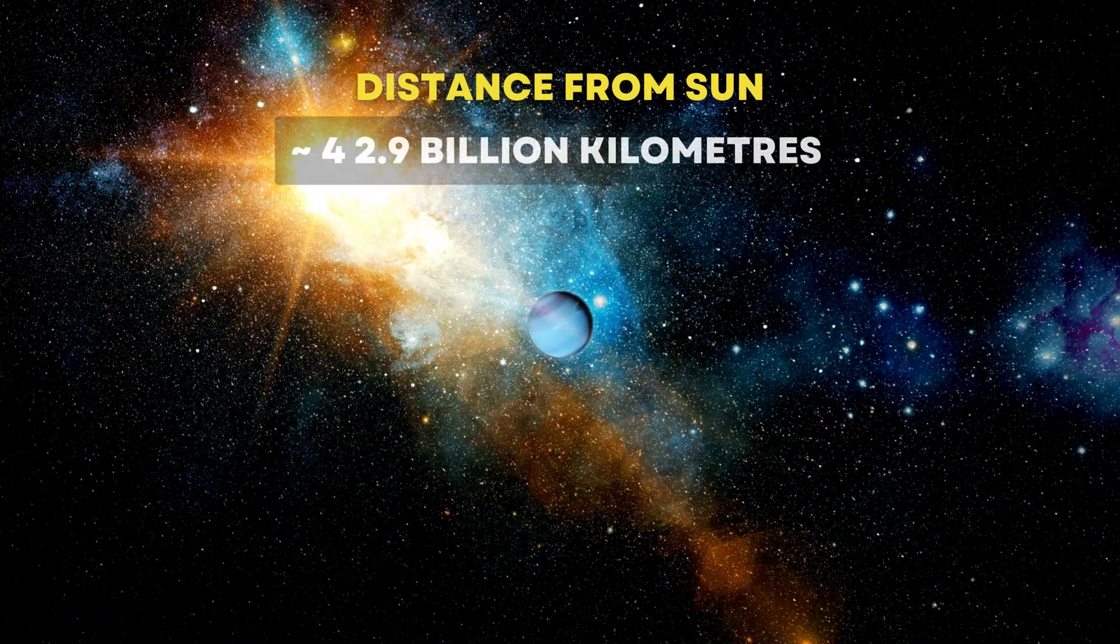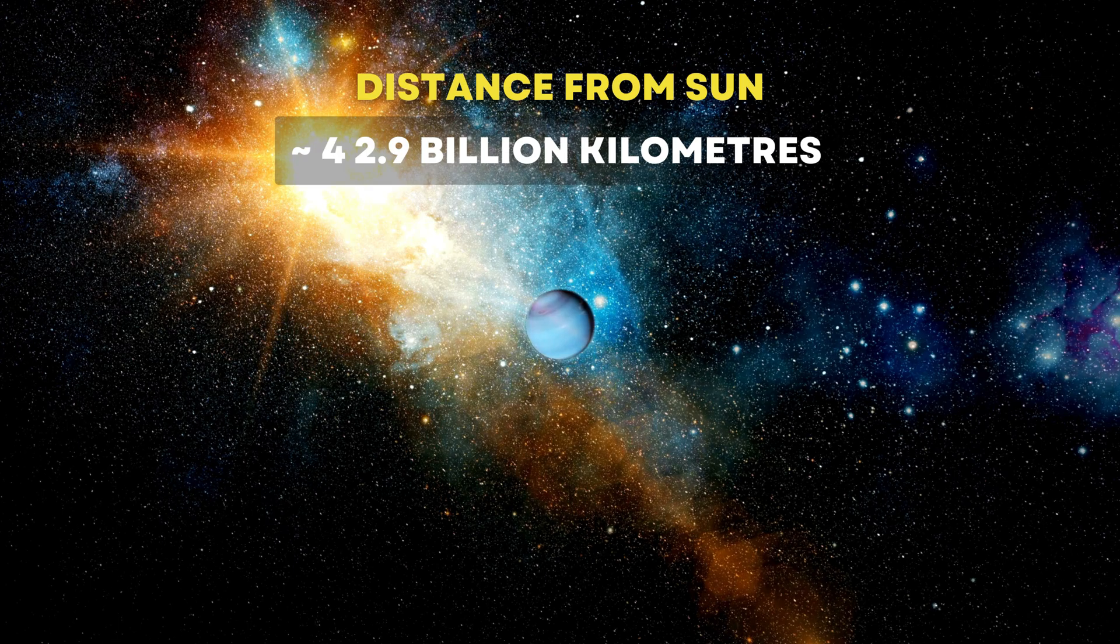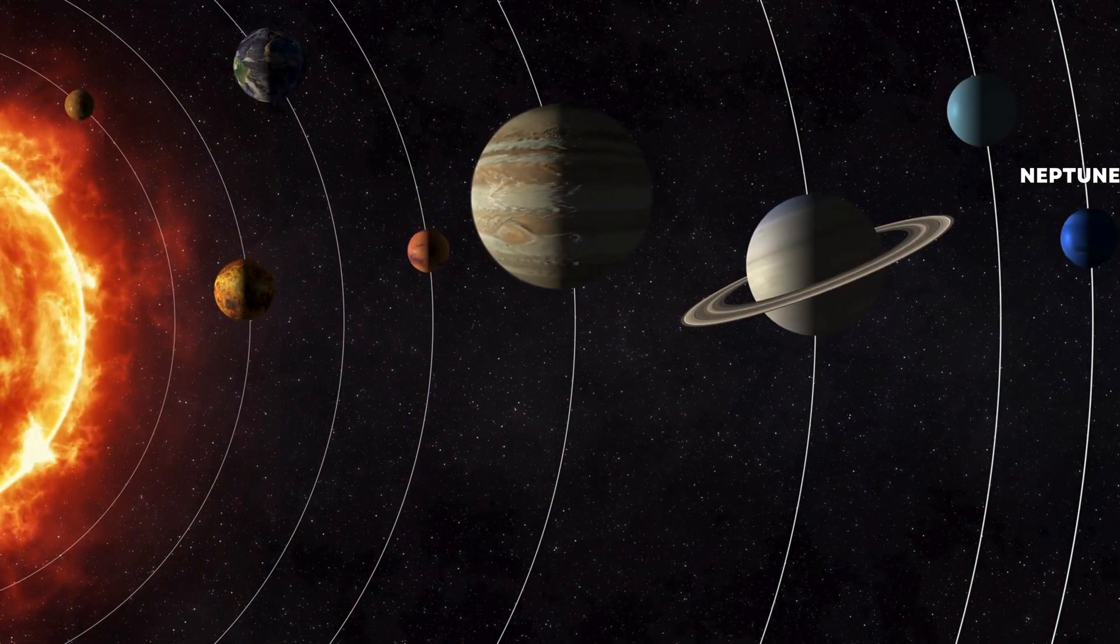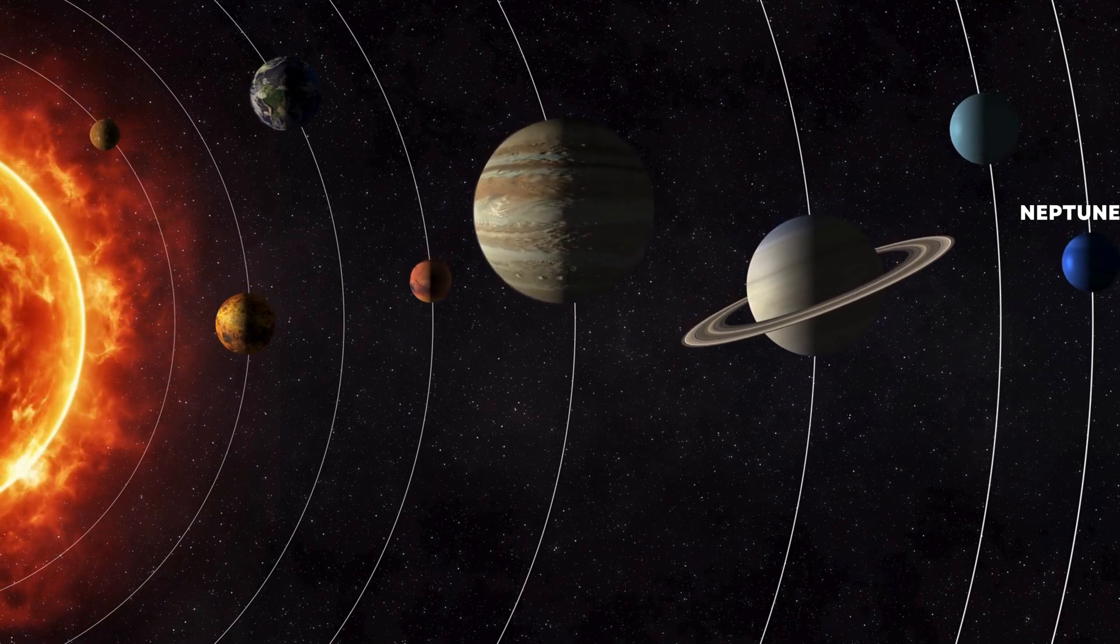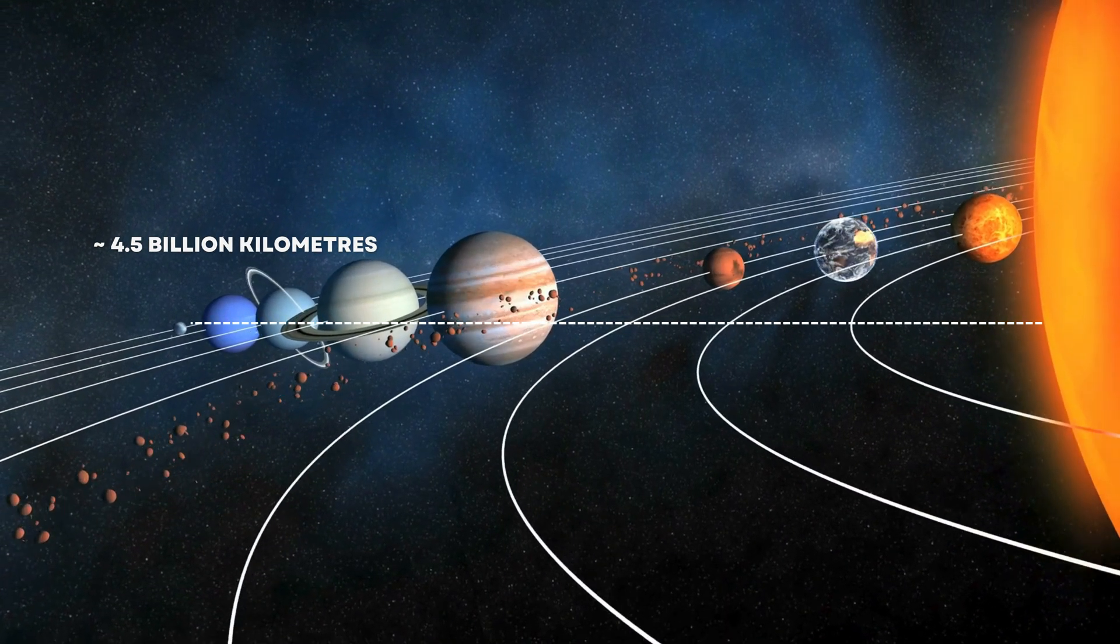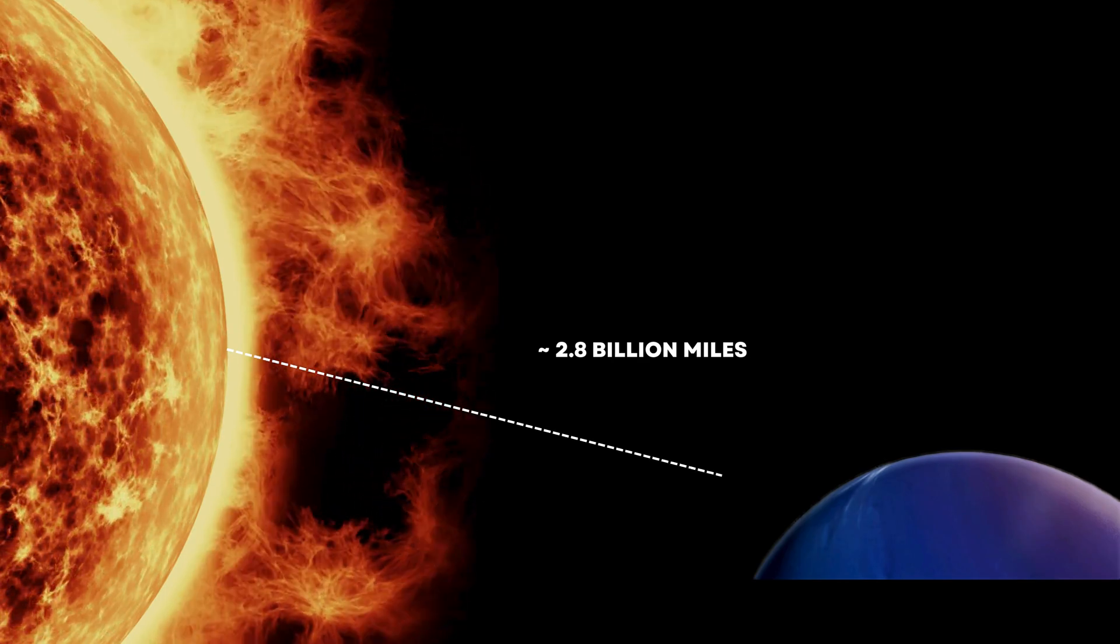Further moving outward, Uranus is around 2.9 billion kilometers, or 1.8 billion miles from the Sun, and Neptune, the most distant planet in our solar system, orbits at about 4.5 billion kilometers, or 2.8 billion miles away.